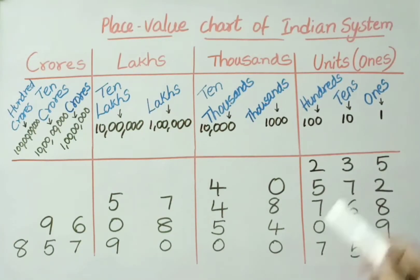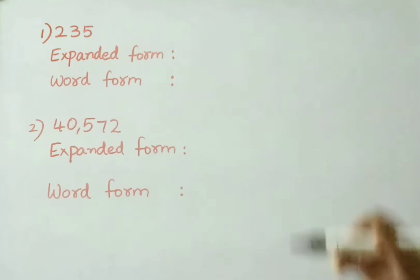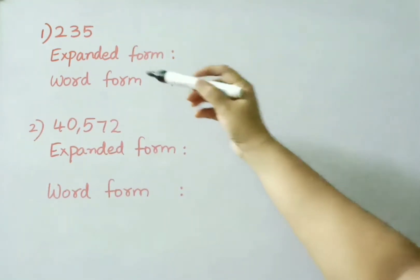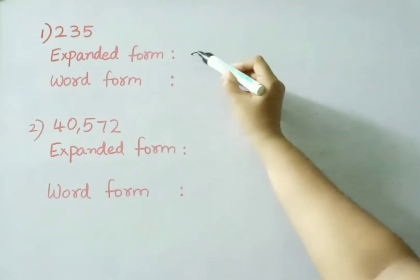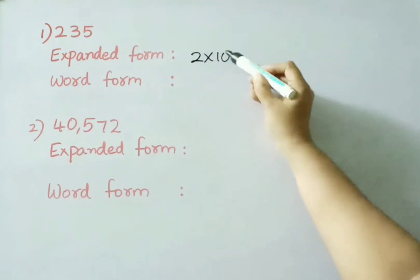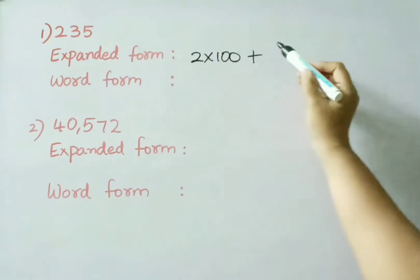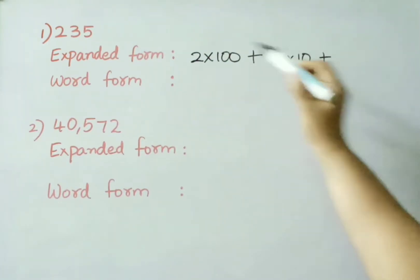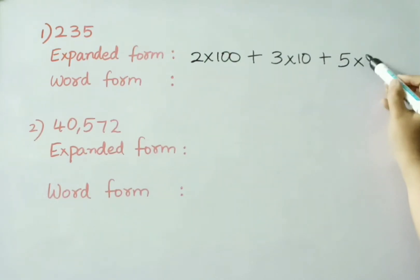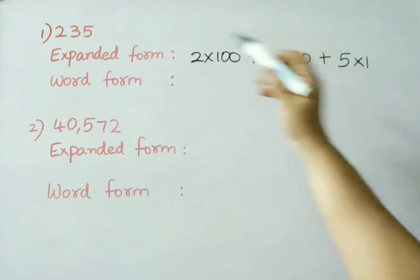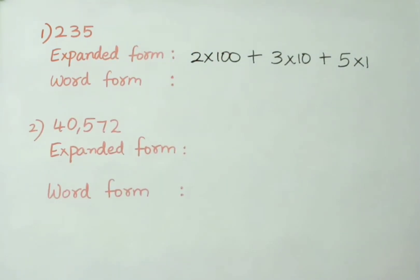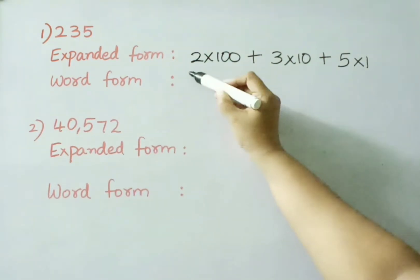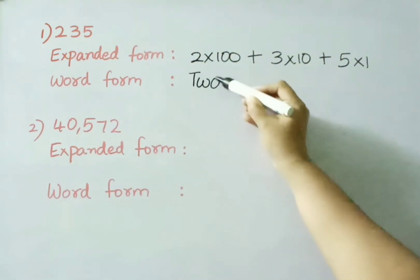Now let us write all these numbers in expanded form and word form. See the first number: two hundred thirty-five. Hundreds place: 2, so write 2 × 100. Tens place: 3, so write 3 × 10. Ones place: 5, so write 5 × 1. So this is the expanded form for the number two hundred thirty-five. Now let us write in word form, that is the number name: two hundred thirty-five.